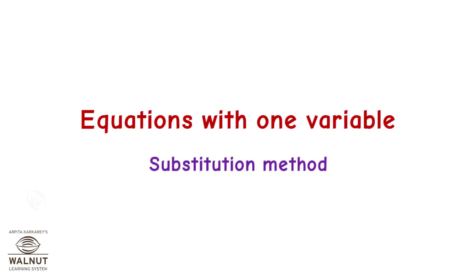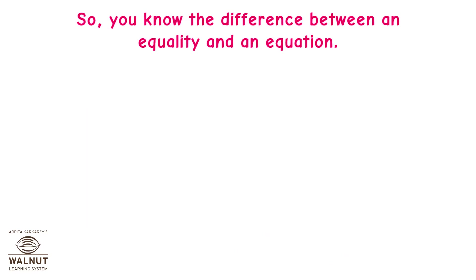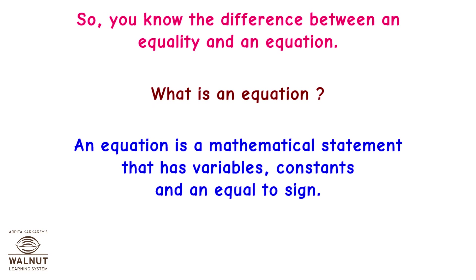Equations with one variable — substitution method. You know the difference between an equality and an equation. What is an equation? An equation is a mathematical statement that has variables, constants, and an equal-to sign.